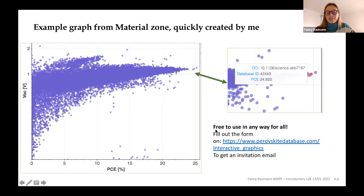This web page is free to use for everyone, in any way anyone might want. The only thing you need to do to access the database is to fill out the form available on the web page at perovskitedatabase.com, and then you will receive an invitation email to access the database. It's that simple.